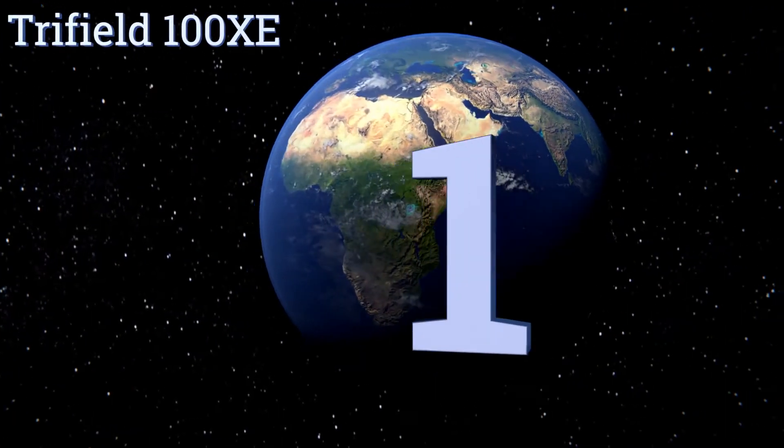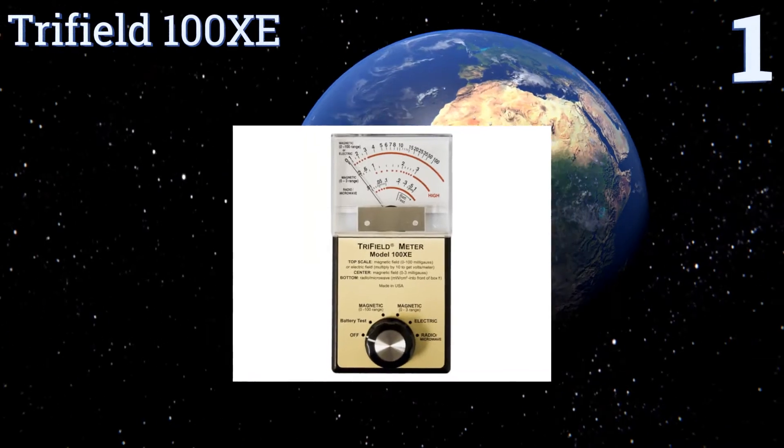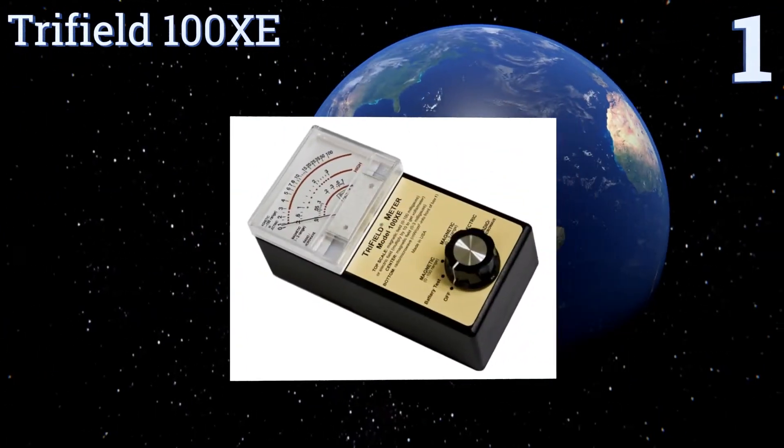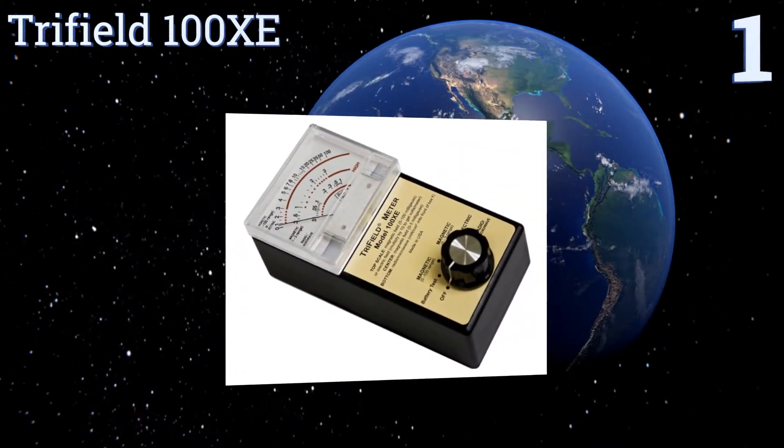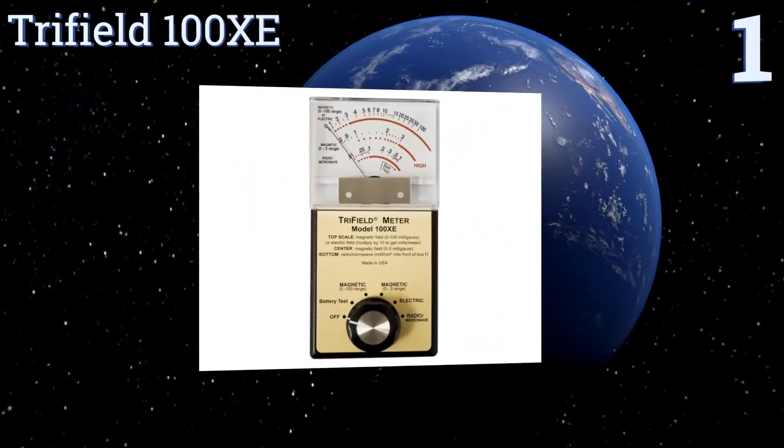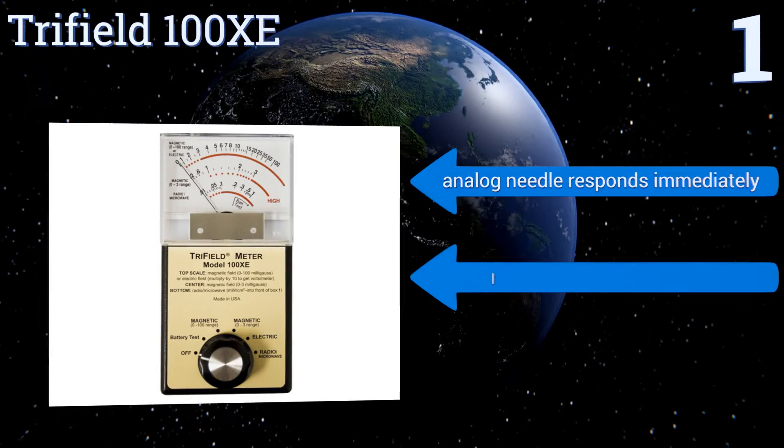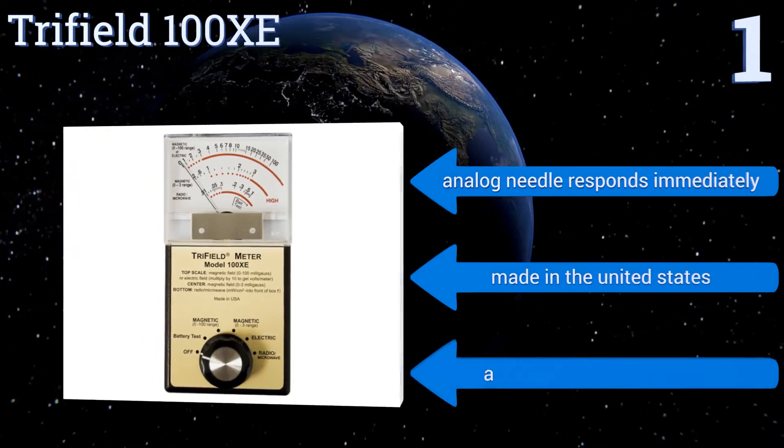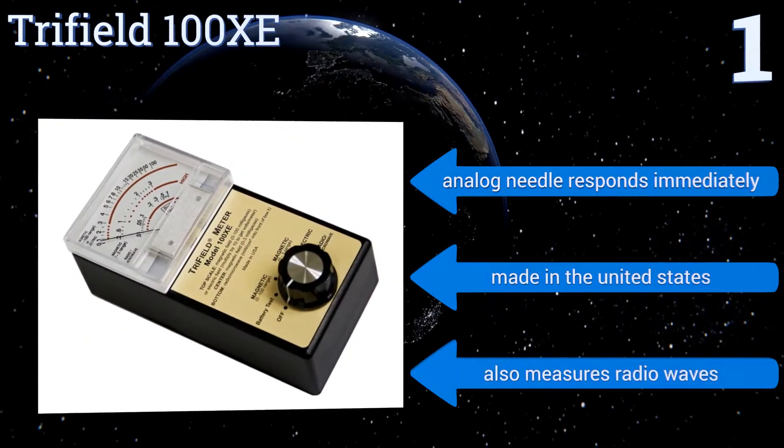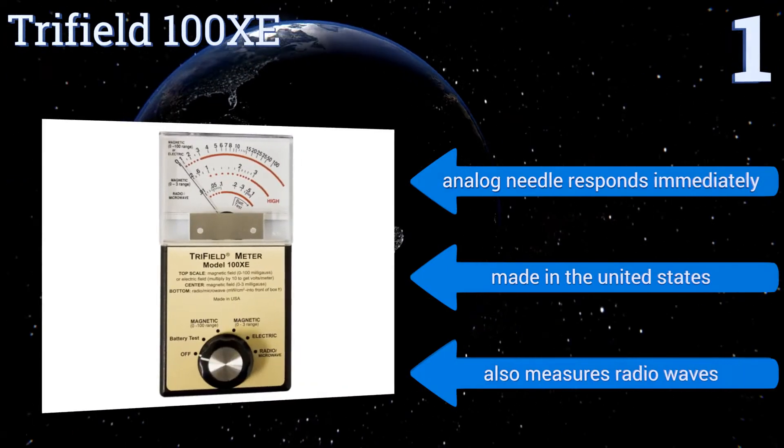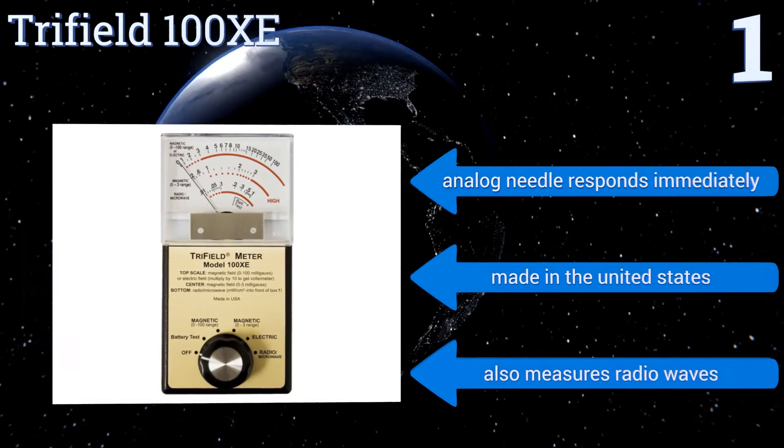And coming in at number 1 on our list, for applications beyond a wild-goose chase in search of the paranormal, the Trifield 100XE is the tool to use. It's extremely sensitive and has an omnidirectional pickup range, so you can gather results quickly with less time scanning back and forth. Its analog needle responds immediately, and it's made in the United States. It also measures radio waves.